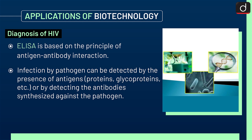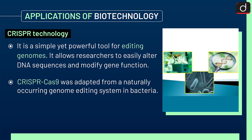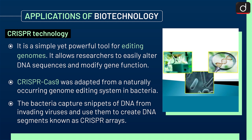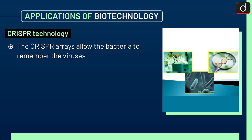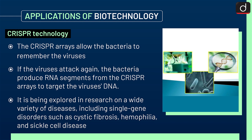Next is CRISPR technology. It is a simple yet powerful tool for editing genomes. It allows researchers to easily alter DNA sequences and modify gene function. CRISPR-Cas9 was adapted from a naturally occurring genome editing system in bacteria. The bacteria capture snippets of DNA from invading viruses and use them to create DNA segments known as CRISPR arrays. The CRISPR arrays allow the bacteria to remember the viruses. If the viruses attack again, the bacteria produce RNA segments from the CRISPR arrays to target the virus's DNA. It is being explored in research on a wide variety of diseases including single gene disorders such as cystic fibrosis, hemophilia, and sickle cell disease. That's all for today — stay tuned for the next episode. Thanks for watching.